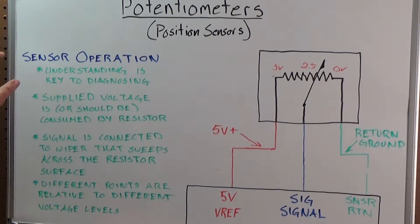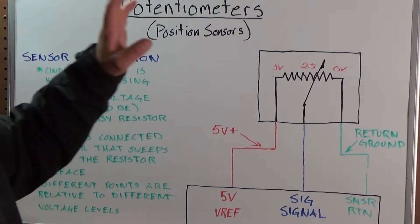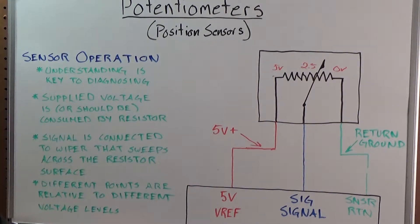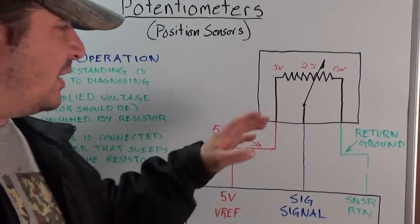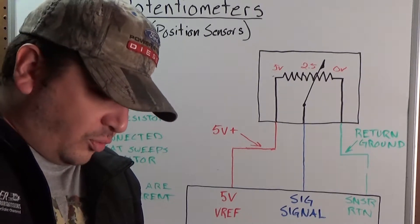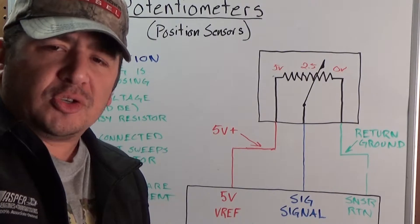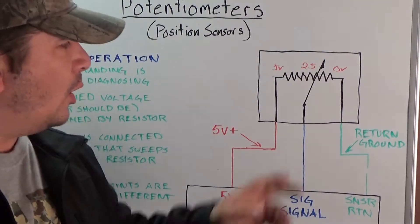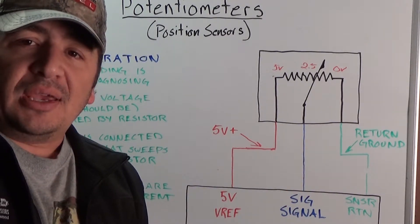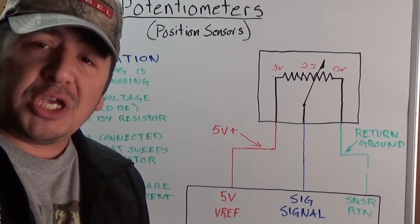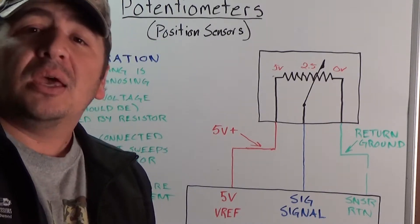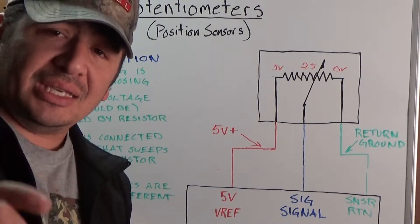The key point, the most important thing is that understanding what this circuit is and what's going on is going to be the key to diagnosing these systems. If you understand this, you don't need someone to walk you through checking this wire to make sure you have that, checking this wire to make sure you have that. Once you understand this and you understand what's going on, you'll be able to come up with your own test methods and you'll be able to come up with your own way of checking it that works for you and that's fastest for you because not everybody's going to check everything the exact same way. But understanding this system is the key to diagnosing it.